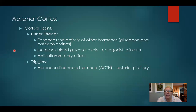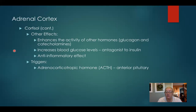Cortisol also enhances the activity of the catecholamines — epinephrine and norepinephrine — those hormones responsible for the fight-or-flight reaction. It also increases blood glucose levels by being an antagonist to insulin. Insulin is produced in the pancreas and is designed to lower blood glucose levels. By inhibiting insulin, cortisol keeps blood glucose levels elevated, providing more energy to each cell.